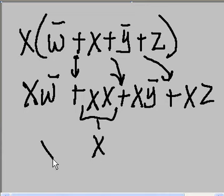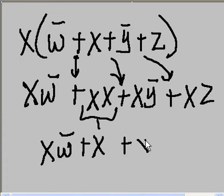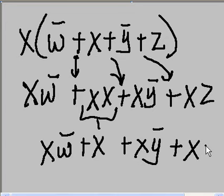So now I have x w-naught ored with x, ored with x y-naught, ored with x z.